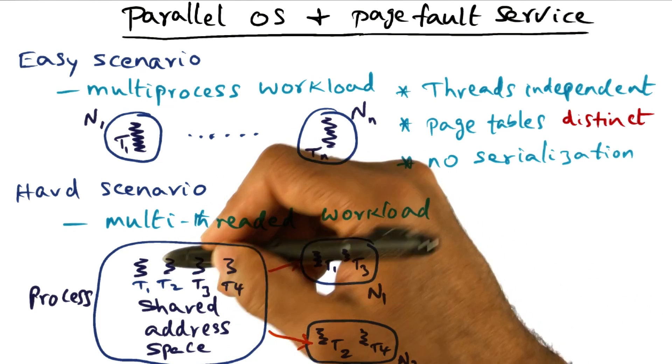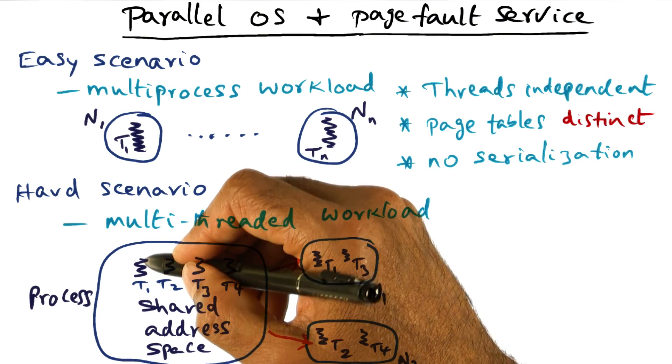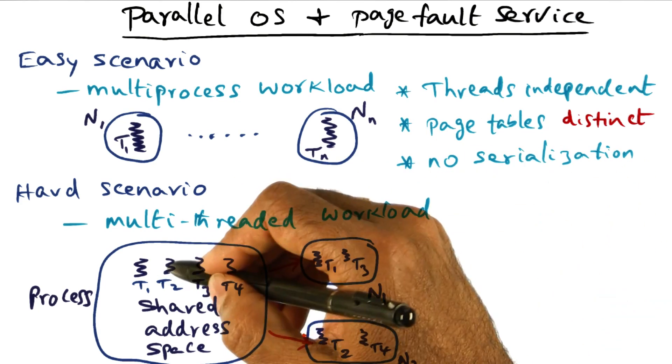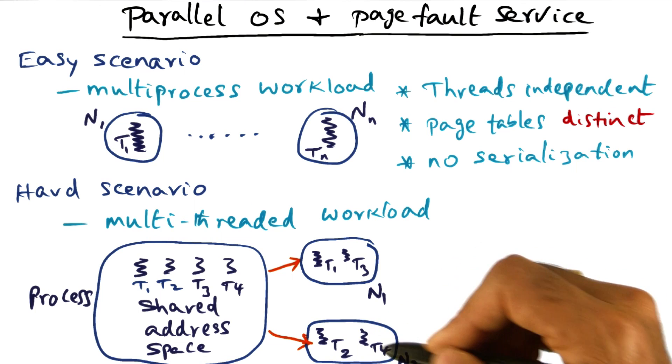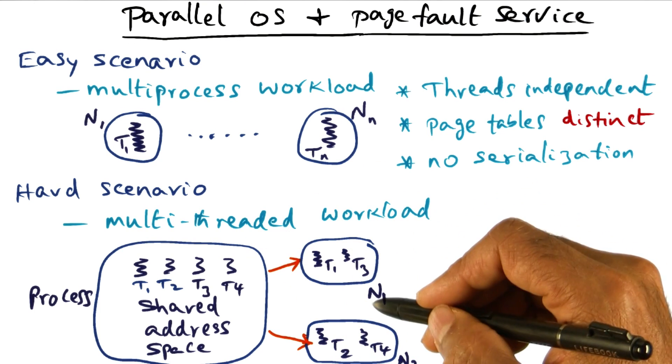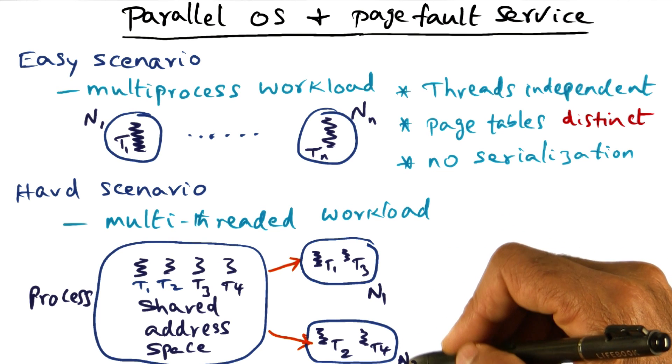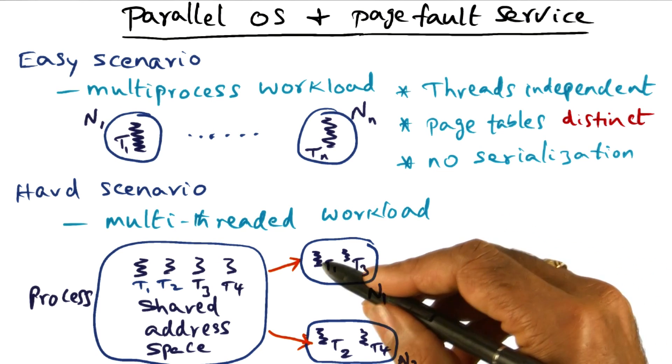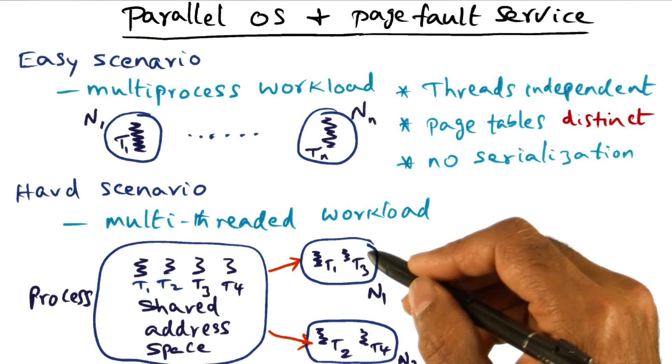The operating system may have chosen to put T1 and T3 on node N1, and T2 and T4 on node N2. So you have a multi-threaded workload now executing on different nodes of the multiprocessor. There is hardware concurrency because there are multiple cores available.